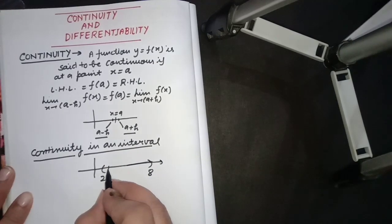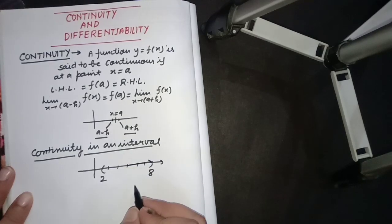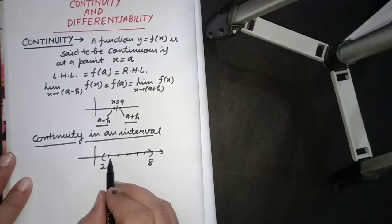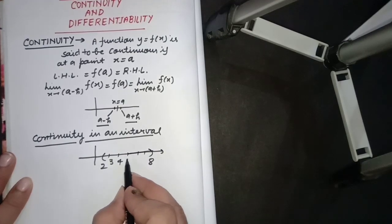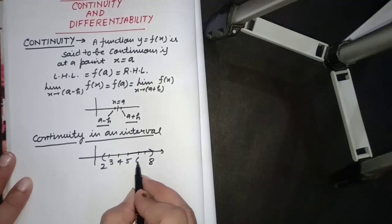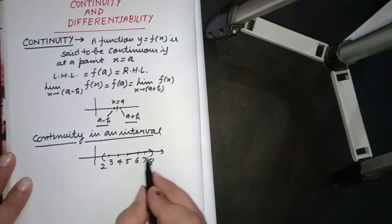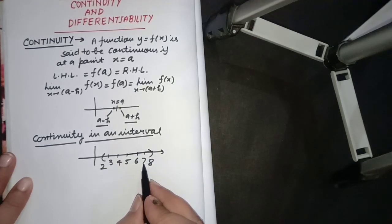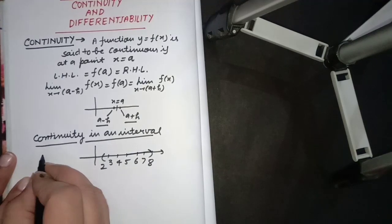At every point, the function must be continuous. A function will be continuous in an interval if it is continuous at all its points — at every point such as 3, 4, 5, 6, 7, and all points. At all points within the interval, if it is continuous, then that function will be continuous in the interval (a, b).